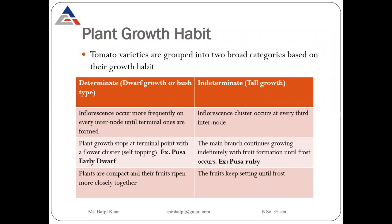What is the difference between determinate and indeterminate? In determinate type tomatoes, inflorescence occurs more frequently on every internode until the terminal ones are formed. In indeterminate type, inflorescence cluster occurs at every third internode. So in determinate type, inflorescence occurs on every internode, and in indeterminate type, inflorescence occurs at every third internode.